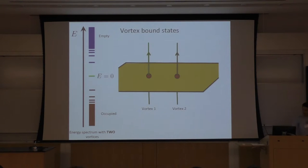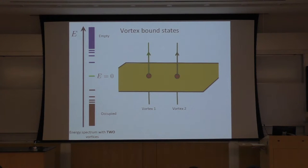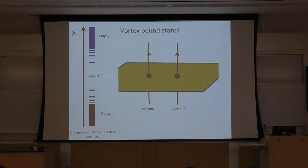Now let's imagine we have two vortices in the system. We cannot have a single vortex in a superconductor because the quantum of flux is hc/e, not hc/2e. So we have to have at least two vortices in the system. For every two vortices, we can solve the spectrum, and the spectrum has a single zero-energy state — not two, just one — for two vortices. I have a single zero-energy mode.